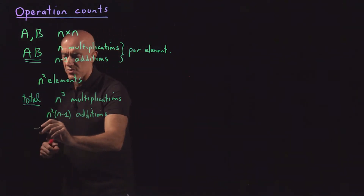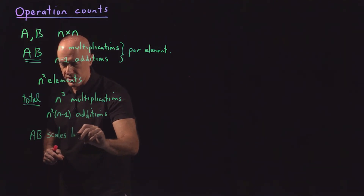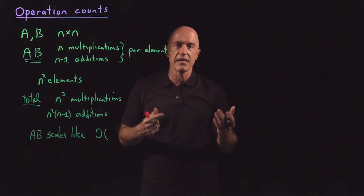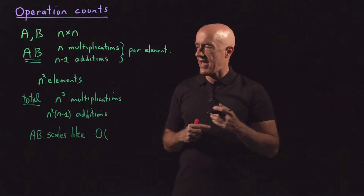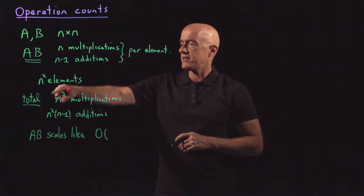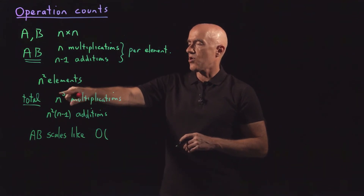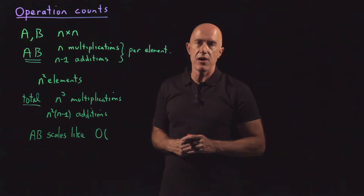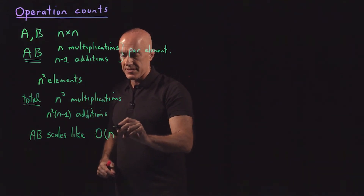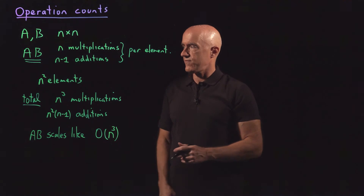We say that the algorithm AB scales like — using big O notation — we look at the leading order term in the size of the matrix N. We don't care about the multiplying constant in front, or the n squared term, or an n term. All we care about is the leading order power, which here is n cubed. So we say that AB scales like O(n cubed). That is very useful information.